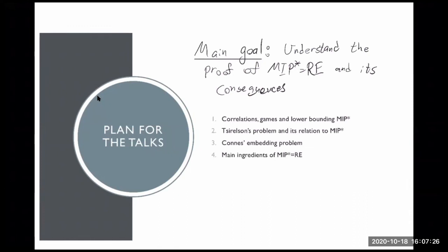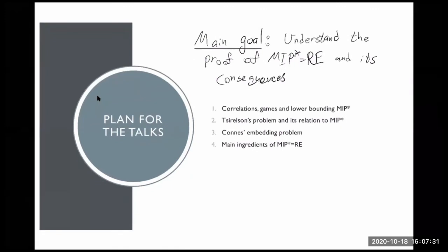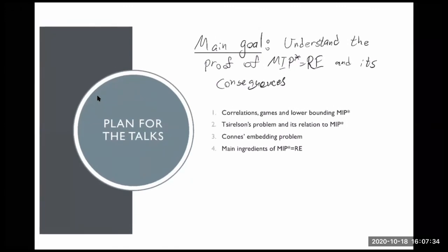The plan for the first two talks — these are introductory talks. We are first going to talk about correlations, games, and lower bounding the complexity class MIP*. Afterwards, I will talk about Tsirelson's problem and its relation to MIP*. Probably this will be all we can cover this week. Next week, we will talk about Connes' embedding problem, and I will outline the main ingredients of the proof of MIP* = RE.